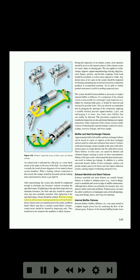After tightening to a specified torque, all nuts should be safetied. With the cowling removed, all necessary cleaning operations can be performed. Some exhaust units are manufactured with a plain sandblast finish; others may have a ceramic coated finish. Ceramic coated stacks should be cleaned by degreasing only and should never be cleaned with sandblast or alkali cleaners. During the inspection of an exhaust system, close attention should be given to all external surfaces for cracks, dents, or missing parts. This also applies to welds, clamps, supports, support attachment lugs, bracing, slip joints, stack flanges, gaskets, and flexible couplings. Each bend should be examined, as well as areas adjacent to welds. Any dented areas or low spots should be inspected for thinning and pitting due to internal erosion by combustion products or accumulated moisture. An ice pick or similar pointed instrument is useful in probing suspected areas. The system should be disassembled as necessary to inspect internal baffles or diffusers.